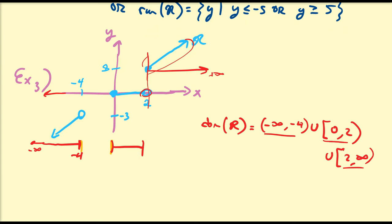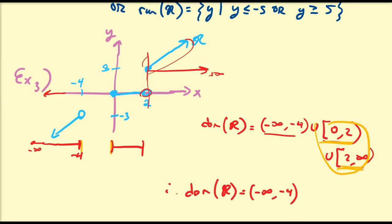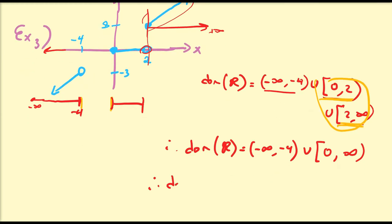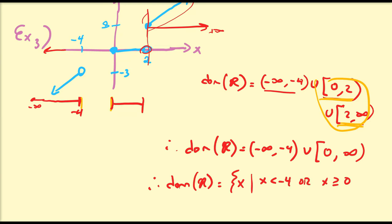Notice that the interval zero to two doesn't include two, but the interval two to infinity does. So we can glue these two intervals together since we're not missing anything at two. Thus the domain of the relation is equal to negative infinity to negative four (parentheses) union bracket zero to positive infinity. In set notation, the domain of r is the set of all x such that x is less than negative four or x is greater than or equal to zero.